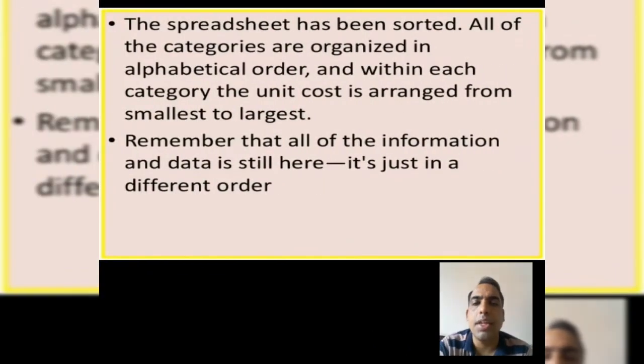The spreadsheet has been sorted. All of the categories are organized in alphabetical order, and within each category the unit cost is arranged from smallest to largest. Remember that all of the information and data is still here, it is just in a different order.